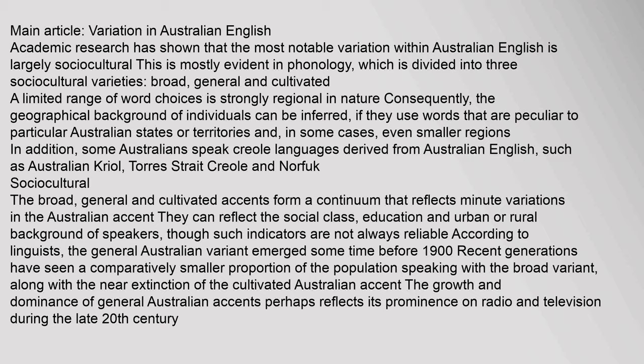The broad, general and cultivated accents form a continuum that reflects minute variations in the Australian accent. They can reflect the social class, education and urban or rural background of speakers, though such indicators are not always reliable. According to linguists, the general Australian variant emerged some time before 1900. Recent generations have seen a comparatively smaller proportion of the population speaking with the broad variant, along with the near extinction of the cultivated Australian accent.